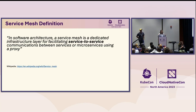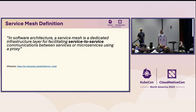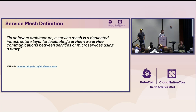Going from the basics — what is a service mesh? A service mesh is essentially a dedicated infrastructure layer for facilitating service-to-service communication between services or microservices using a proxy. We want to focus on that service-to-service part, because that communication is what makes a distributed application possible. You can add a service mesh to your application to add capabilities for security, observability, and traffic management — all without having to add anything to your application code.